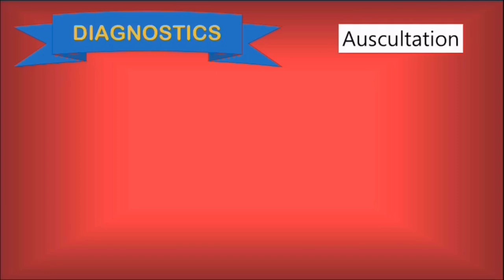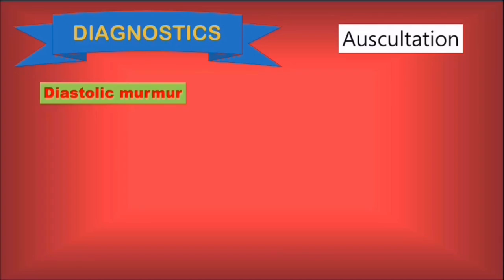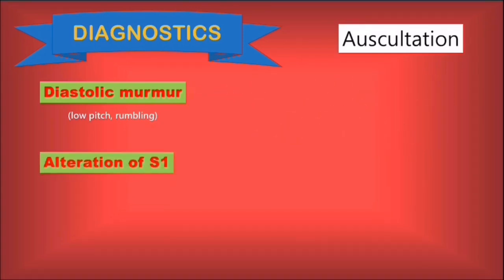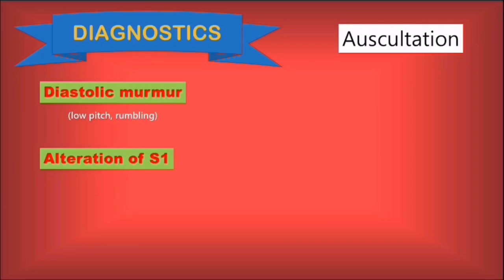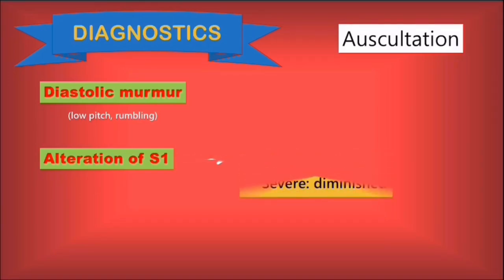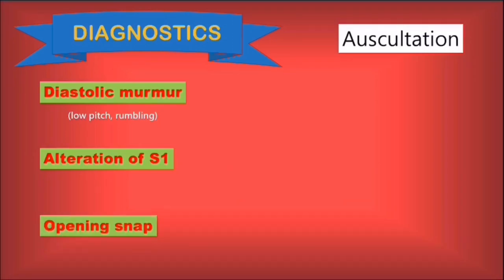For the next section of our lecture, we will present the main diagnostic tools we can use, beginning with cardiac auscultation. For mitral stenosis, we can detect a low-pitch, rumbling, diastolic murmur best heard at the cardiac apex, which intensifies when the patient lies on their left side. The S1 is clearly altered — either intensified in early stages or diminished in late stages of mitral stenosis. The opening snap is clearly audible between the S2 and the murmur.